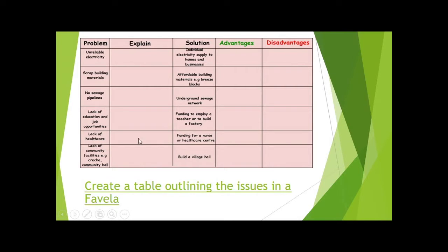On the left box we need to explain why each issue is a problem. So we have unreliable electricity — why would that be a problem? If there was unreliable electricity, there'd be difficulty with light at night, and problems can come such as increasing crime. There's less opportunity to make food, less opportunity to use heat. Electricity is essential, but any electricity available in these favelas is precious.